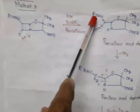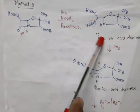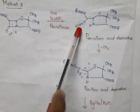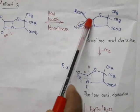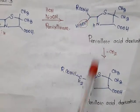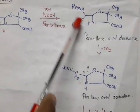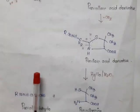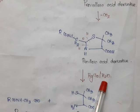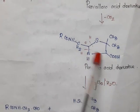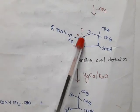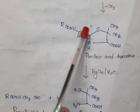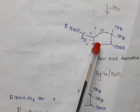With benzylamine instead of R, it is called penicilloic acid. On decarboxylation, CO2 is removed and H is added to CH, converting it to CH2. The product is RCONH-CH2, and this is called peniloic acid. Again on hydrolysis, the bond between carbon and nitrogen and bond between carbon and sulfur are broken.